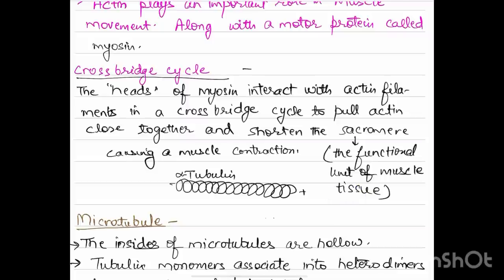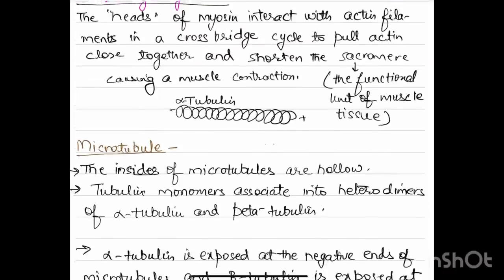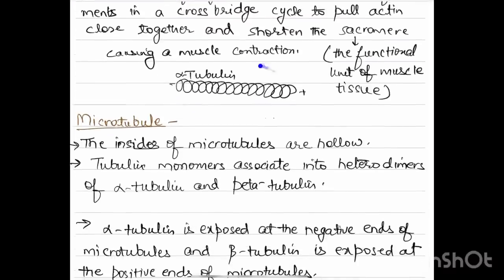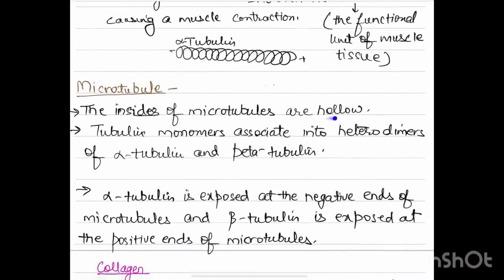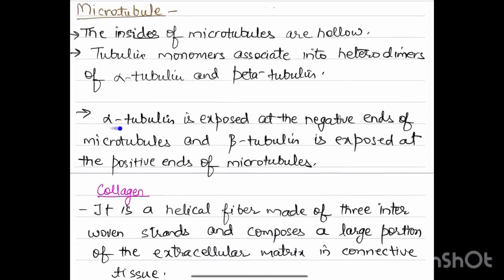Next we have microtubules. The tubulins are the monomer of microtubule. The insides of microtubules are hollow and tubulin monomers associate into heterodimers of alpha-tubulin and beta-tubulin. Alpha-tubulin is exposed at the negative ends of microtubules and beta-tubulin is exposed at the positive ends.